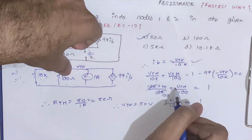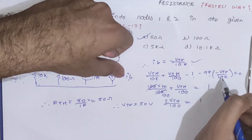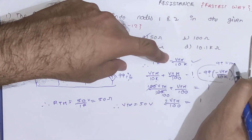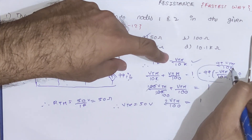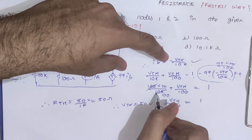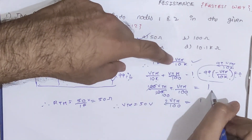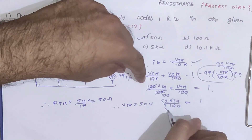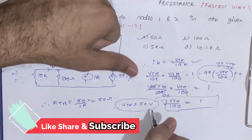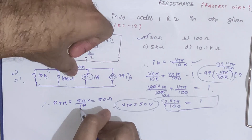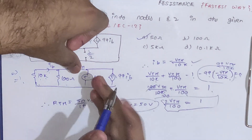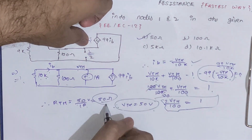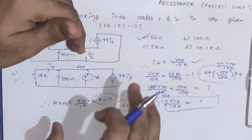Applying KCL: Vts/10k + Vts/100 − 1 − 99·Ib = 0, where Ib = −Vts/10k, giving 99·Vts/10k. Adding Vts/10k gives 100·Vts/10k + Vts/100 = 1, which simplifies to 2·Vts/100 = 1, so Vth = 50 V. Therefore Rth = 50 V / 1 A = 50 ohm. Following this trick lets you solve this type of problem very quickly.